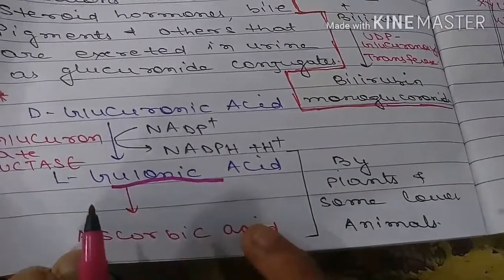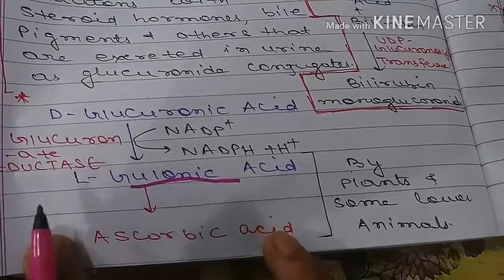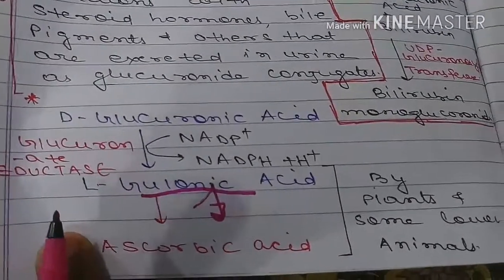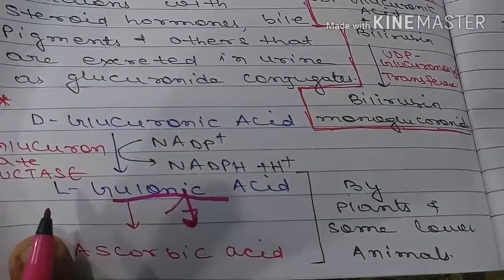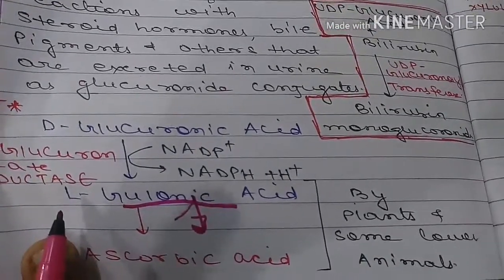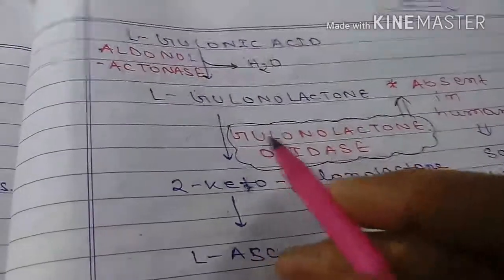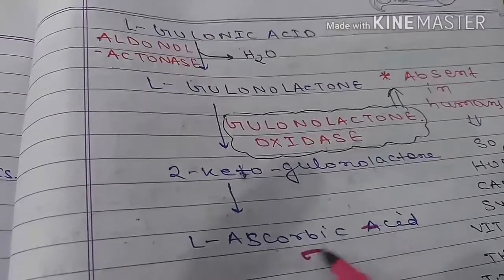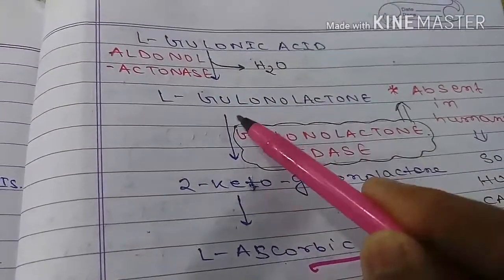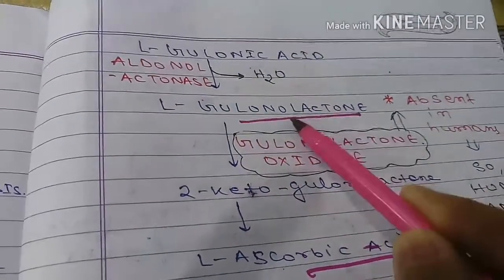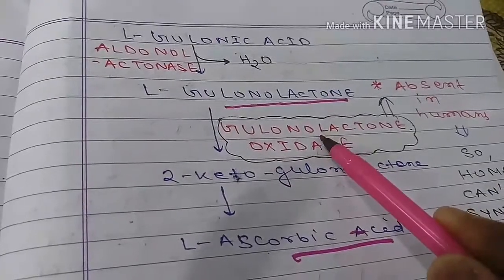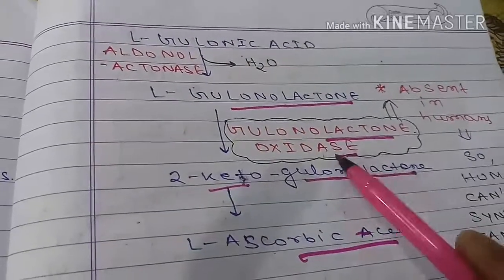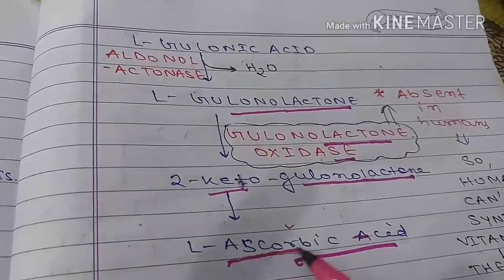In lower plants and some lower animals, L-gulonic acid can be converted to ascorbic acid (Vitamin C). The pathway proceeds: L-gulonic acid → gulonolactone → 2-keto-gulonolactone → ascorbic acid. The key enzyme is gulonolactone oxidase, which catalyzes the last step to form ascorbic acid.